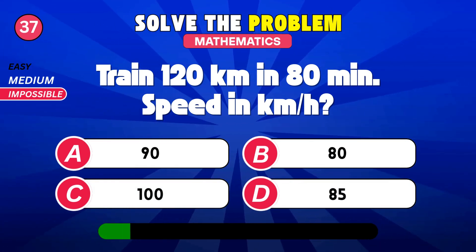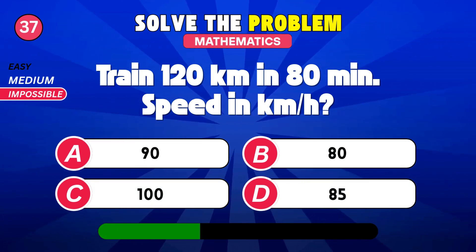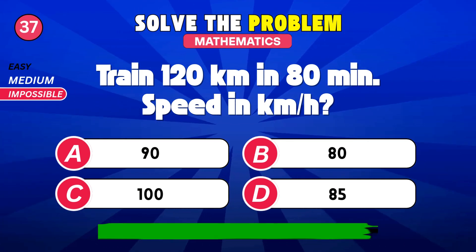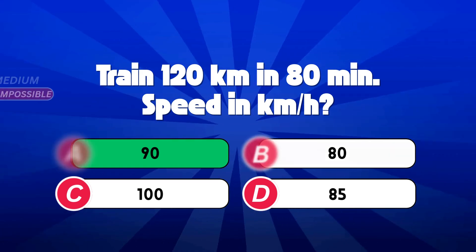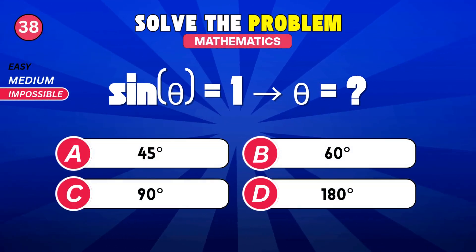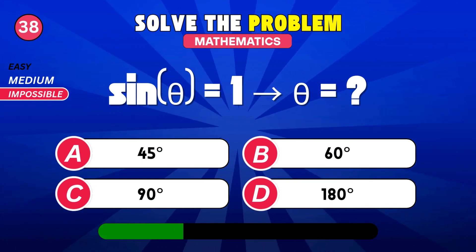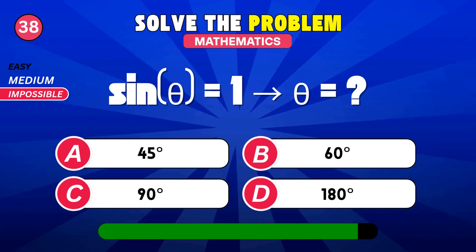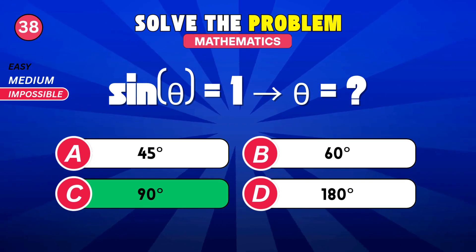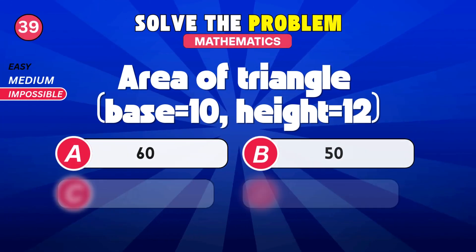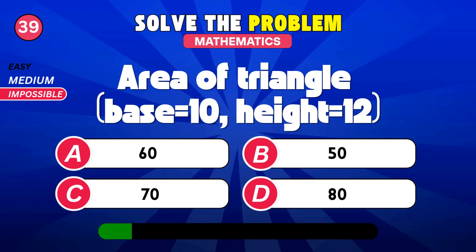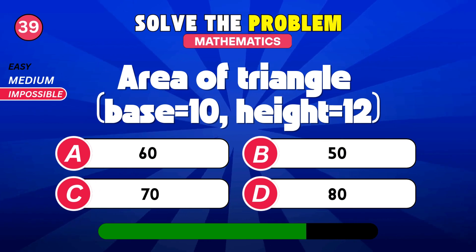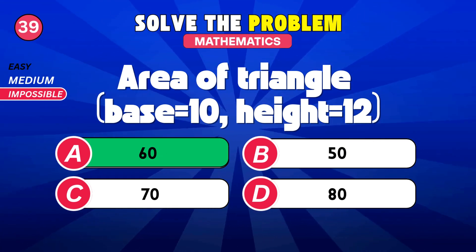Find the speed of train in kilometers per hour. 90. Find the angle. 90 degrees. Area of triangle. 60.